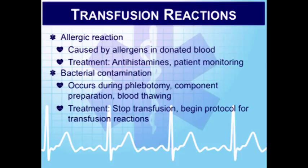Bacterial contamination is uncommon but can occur during phlebotomy, blood component processing, or during thawing of blood products. Despite being very uncommon today, it can cause rapid onset and death. Onset is usually within the first 30 minutes. Symptoms include chills, fever, vomiting, abdominal cramping, bloody diarrhea, blood in the urine, shock, renal failure, and DIC. Monitor patients at least every 15 minutes — early recognition is critical.